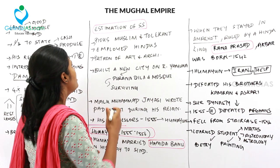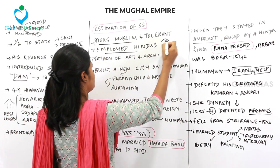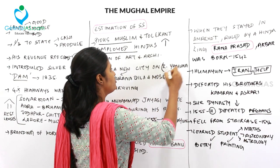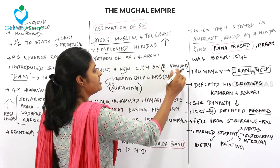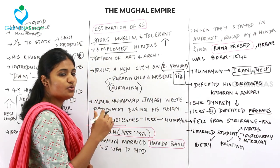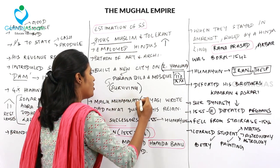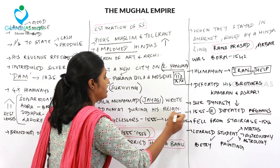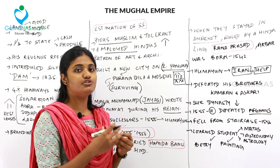Sher Shah was a pious Muslim but tolerant towards other religions and employed Hindus in high posts. He was a patron of art and architecture and built a new city on the banks of the Yamuna, of which only Purana Qila and a nearby mosque survive today. The poet Malik Muhammad Jayasi, who wrote the Padmavat, lived during his reign.